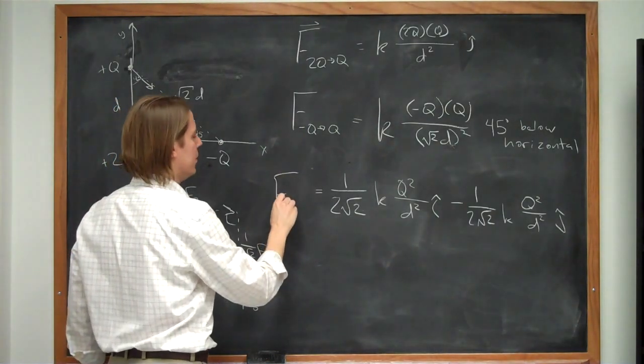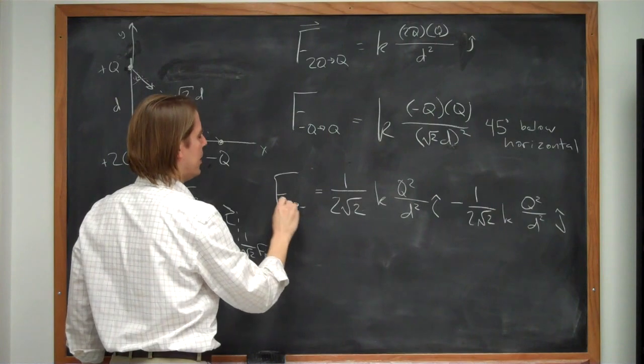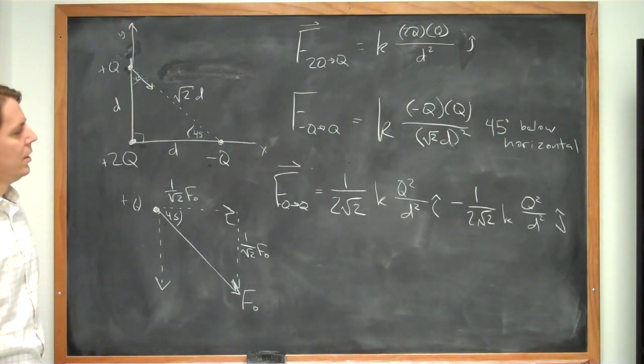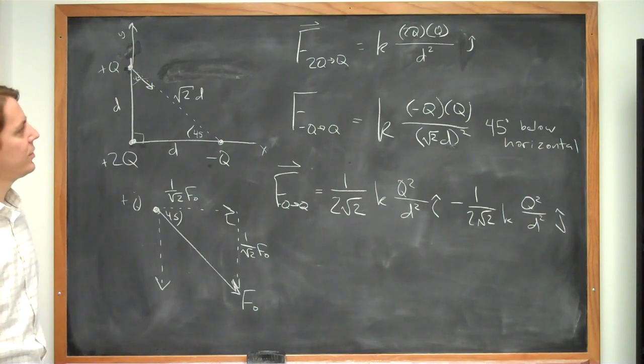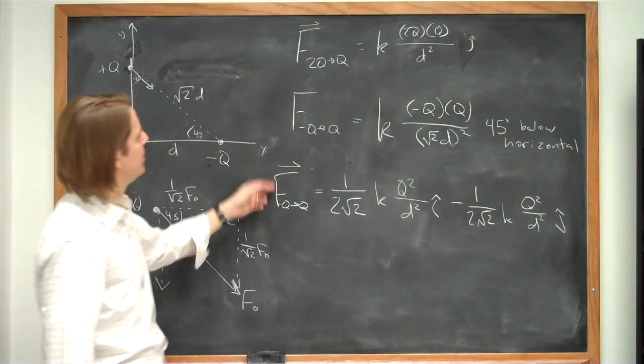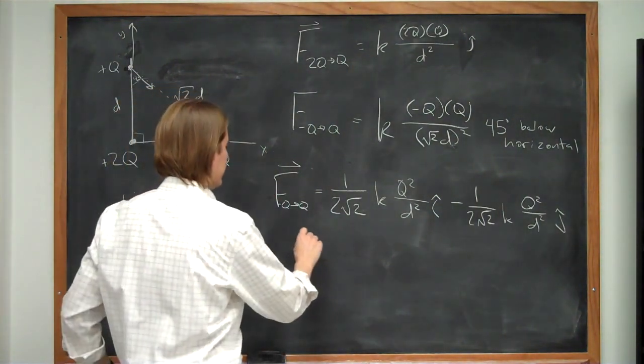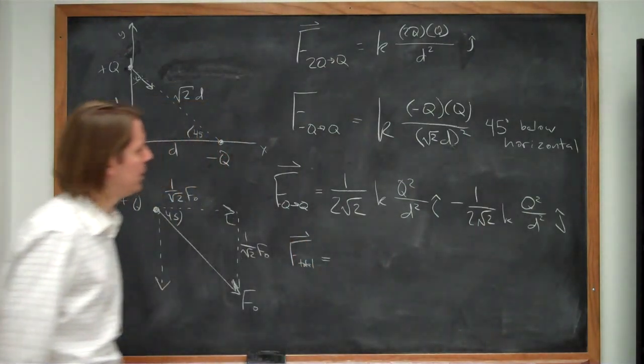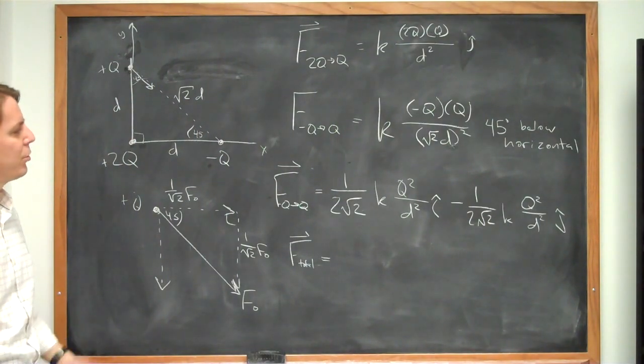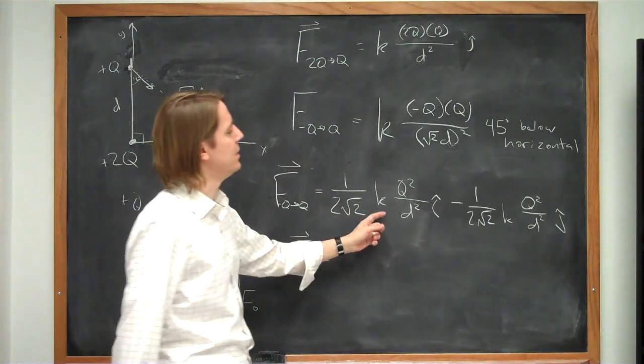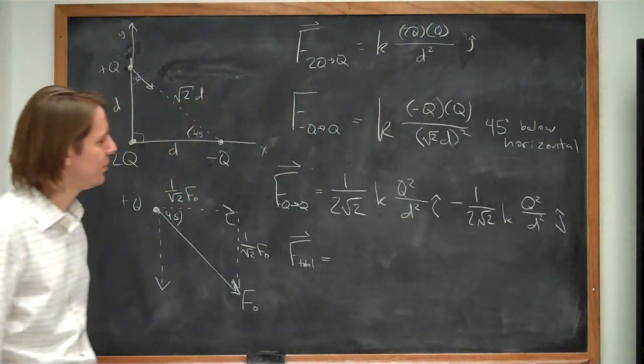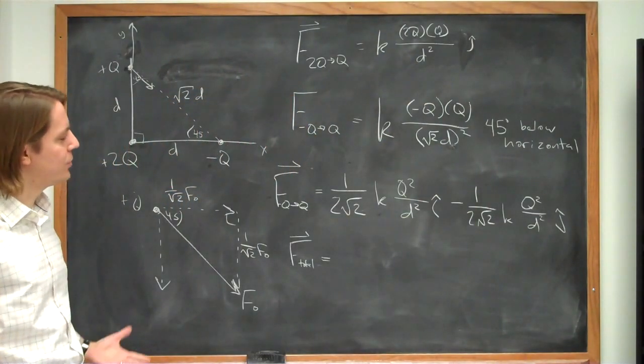Okay. So this is f of q minus q. So now to get the whole thing correct. All we have to do is add these two to get f total. So we just combine the proper components. We combine the x direction components. And we combine the y direction components.